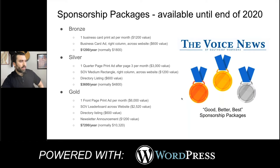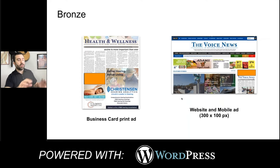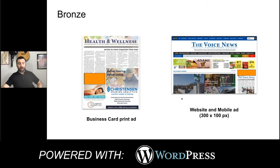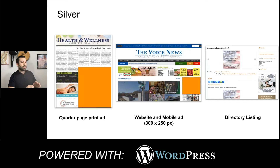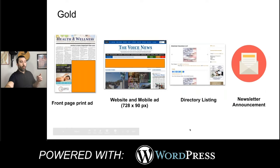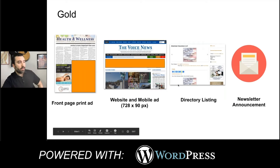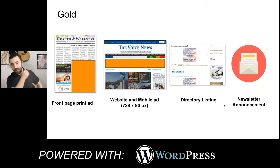I think presenting it this way is easier than having a single shot of the home page with boxes everywhere. This breaks it down cleanly: bronze is this, silver is this and includes the directory, gold is everything you saw before — slightly different, on the front page, it's a leaderboard — and then the newsletter.